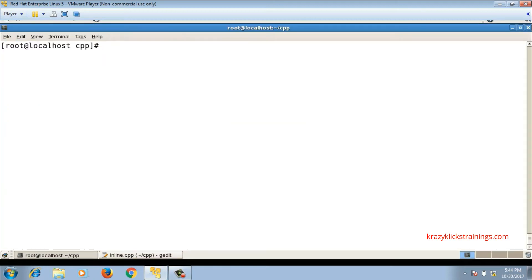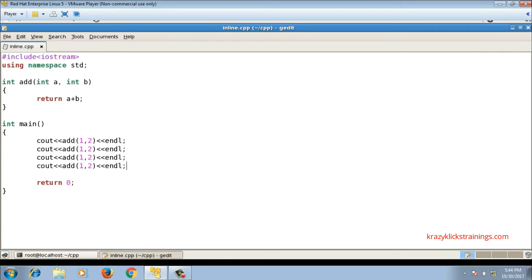Now the name of the file is inline.cpp, g plus plus inline.cpp hyphen o inline dot slash inline. This will give me the output but because it is ordinary function it is not declared as inline. All the steps which I have described in the theory will be followed by the compiler at each function call.